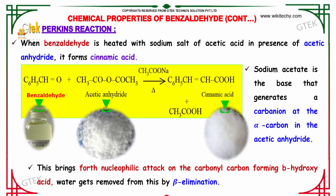Perkin's reaction: When benzaldehyde is heated with the sodium salt of acetic acid in the presence of acetic anhydride, it forms cinnamic acid. Sodium acetate acts as the base that generates the carbanion at the alpha carbon of the acetic anhydride. Reacting benzaldehyde with acetic anhydride and sodium acetate under heat gives cinnamic acid along with CH3COOH (acetic acid).